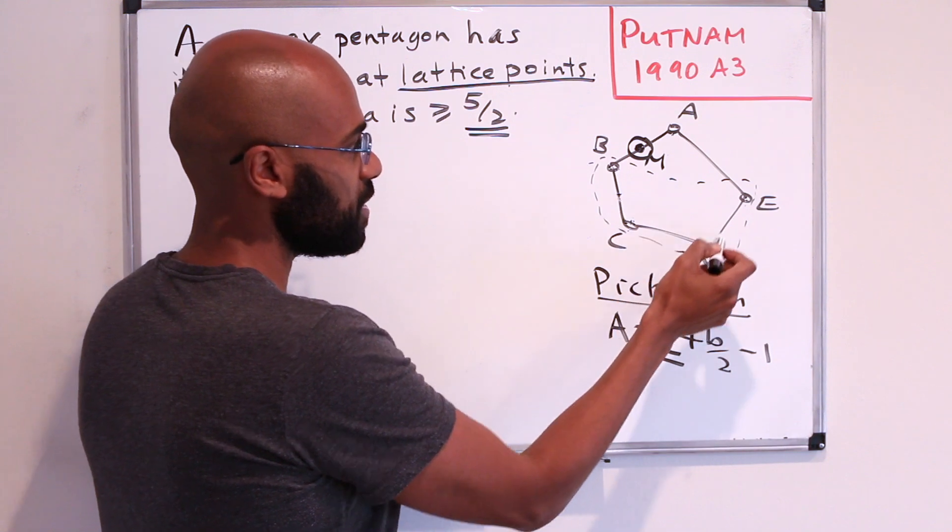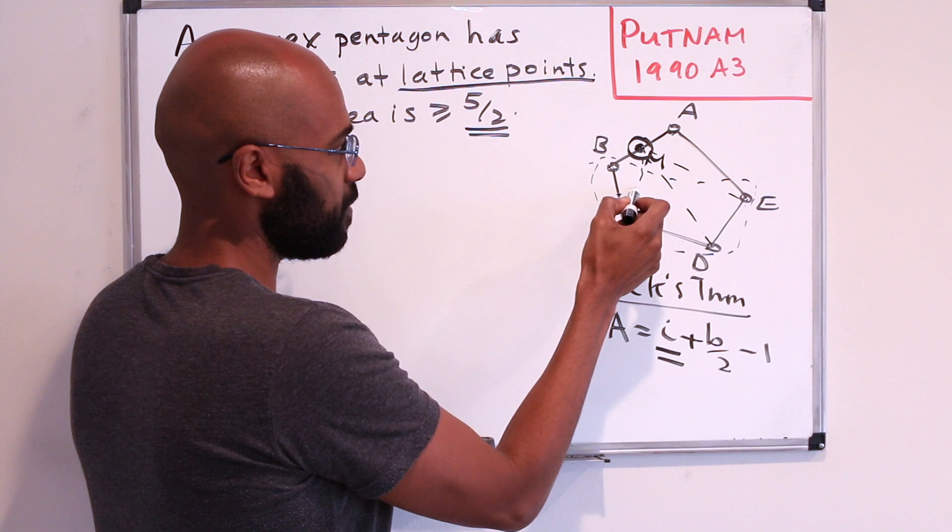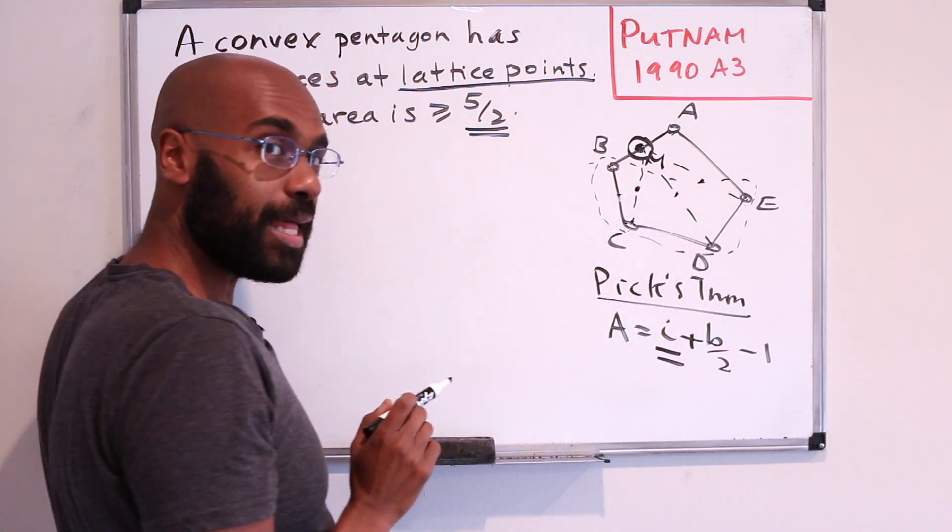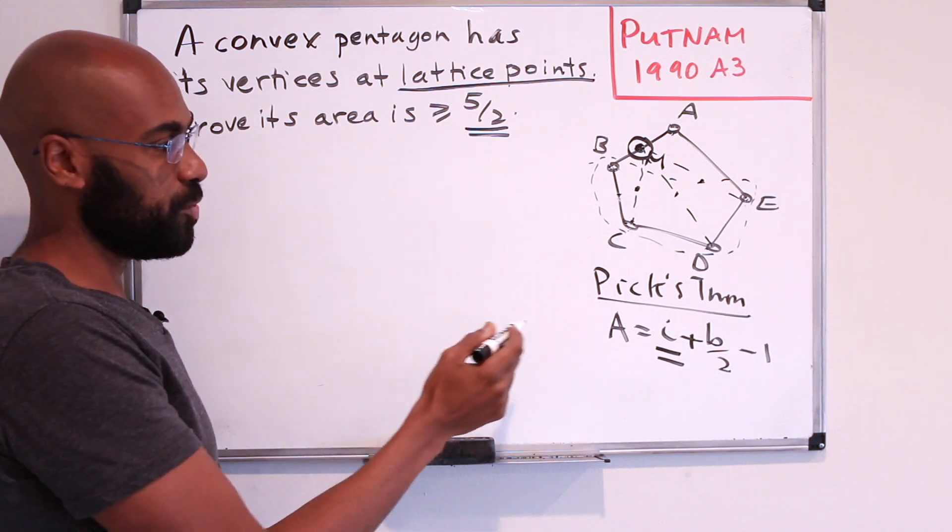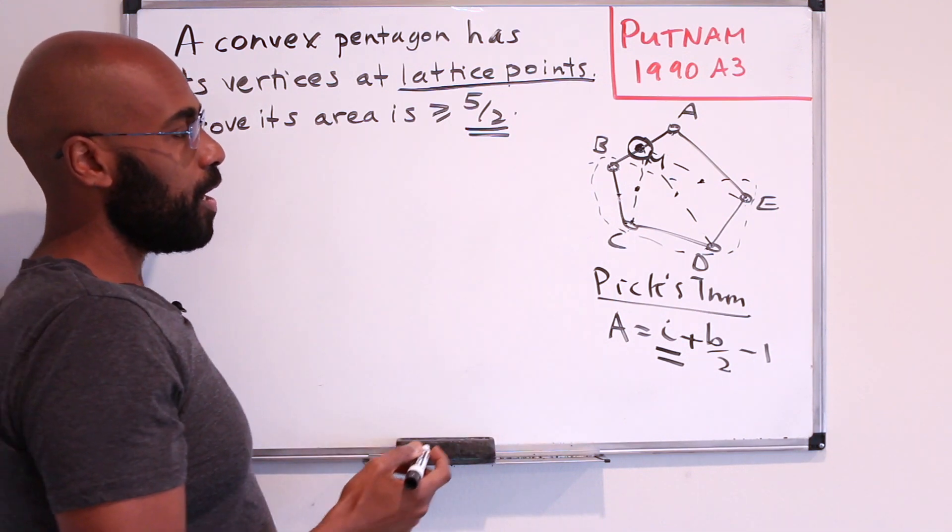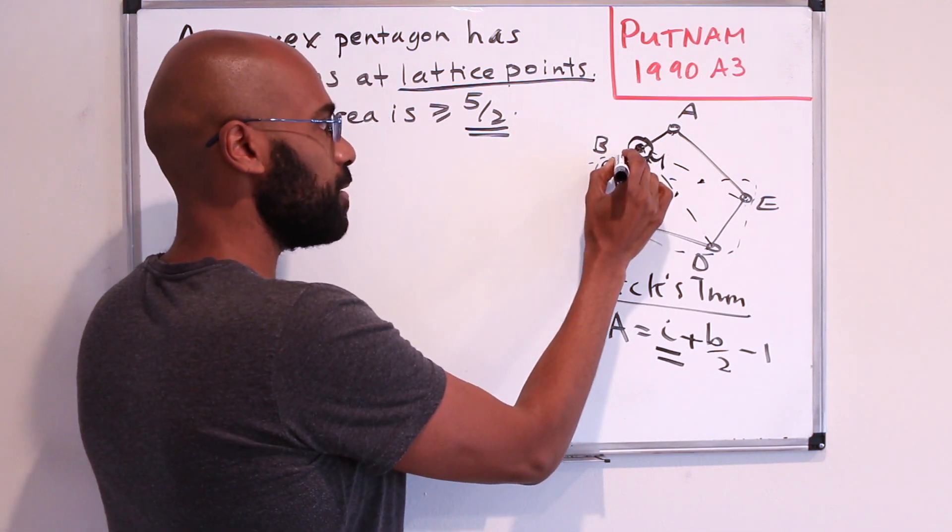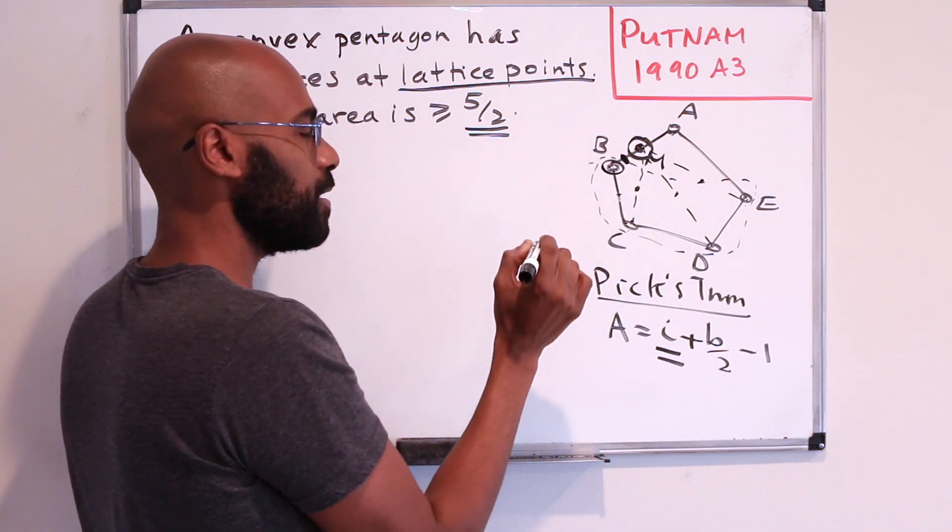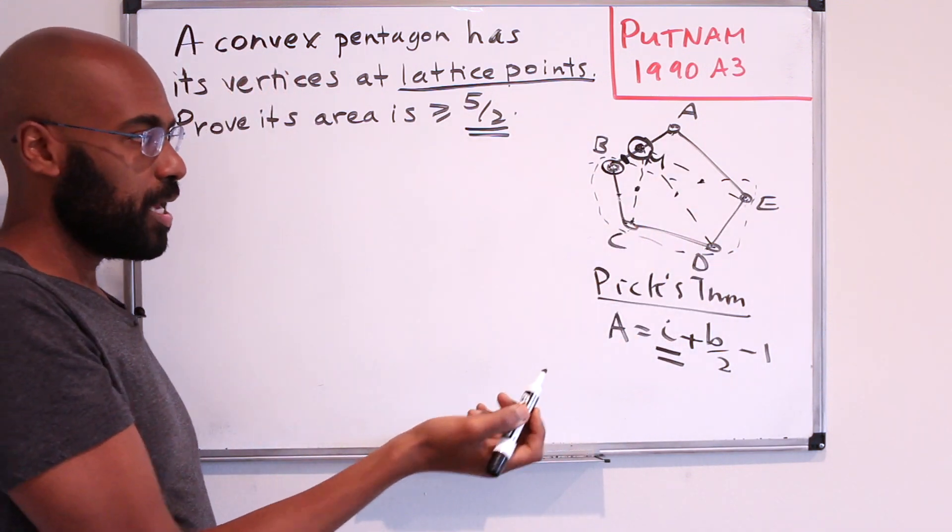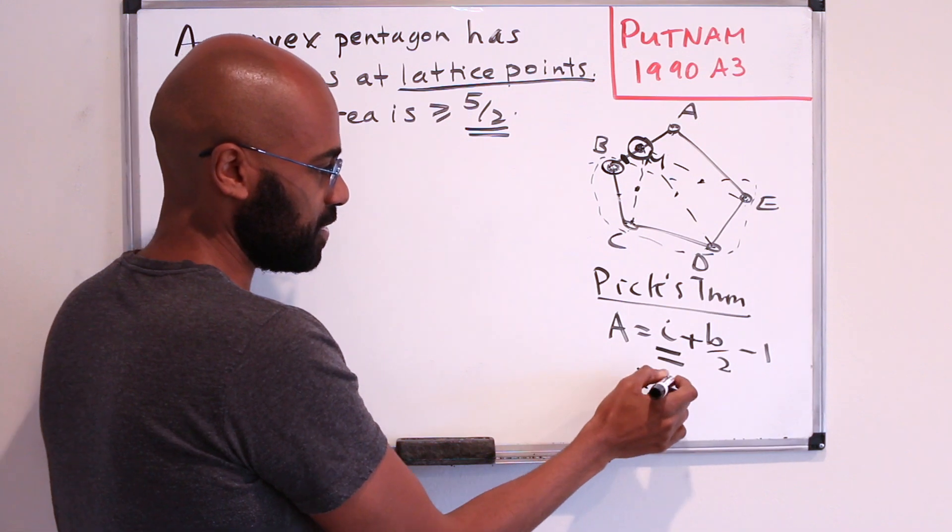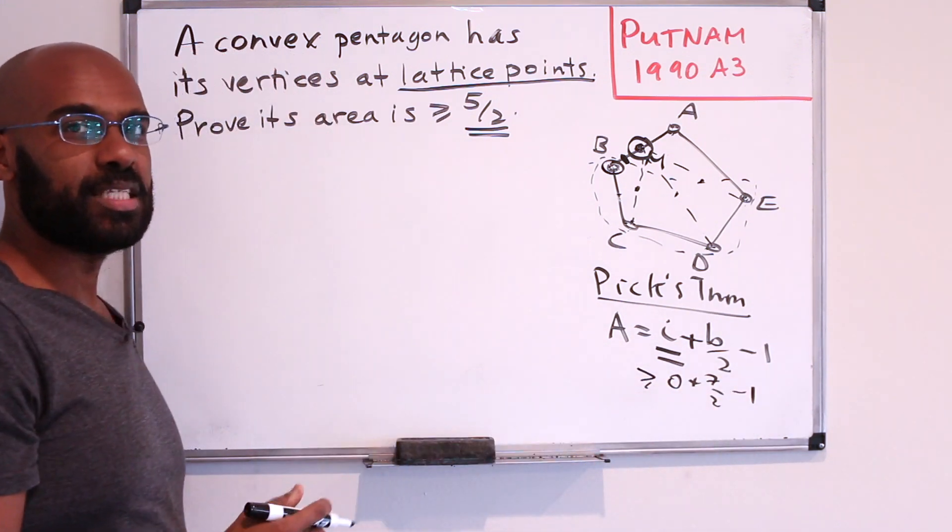If it's one of these three points, then the midpoint of that line segment would be a new interior point, and so we get an area of at least five halves. Otherwise, it's this point that shares a parity with M, and then we can introduce the midpoint of that, which then gives us one, two, three, four, five, six, seven boundary points, and so we have that this is at least zero, plus seven halves, minus one, which again is five halves.